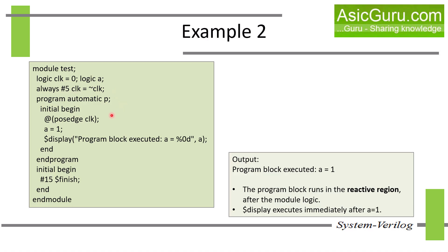There is a program block that waits for a positive edge of the clock, then assigns value one to A, then displays the value. The program block executes in the reactive region of the same timestamp. When the positive edge occurs at t=5, statement A = 1 executes and it prints the value of A which is one. A second initial block terminates the simulation at t=15 with $finish, so no further positive edges are processed. Only one positive edge at t=5 is processed, and the output shows: program block executed, A equals one.